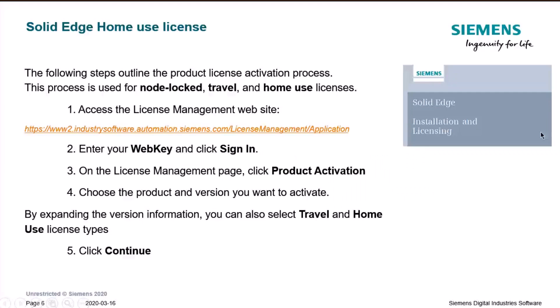First, let's cover the home use license. Home use license is very useful when you need to work from home. The following steps outline the process of activating this particular license. First of all, you need to access the license management website — you can see the link on the screen. You'll need a WebKey account and another piece of information, which we'll discuss on the next slide.